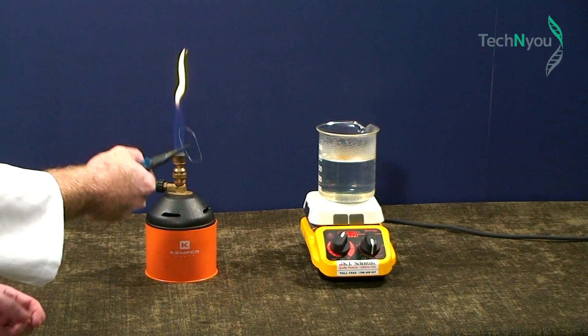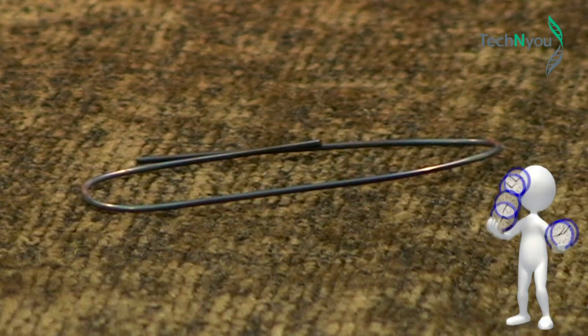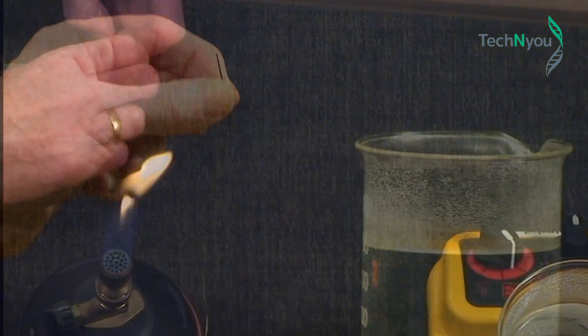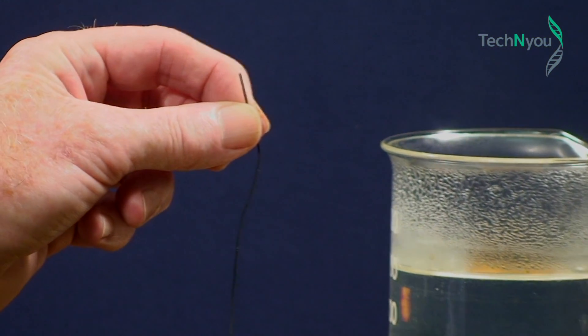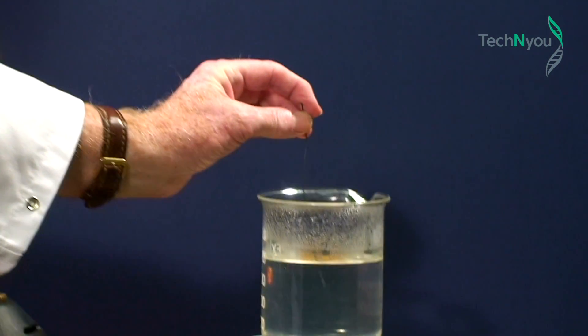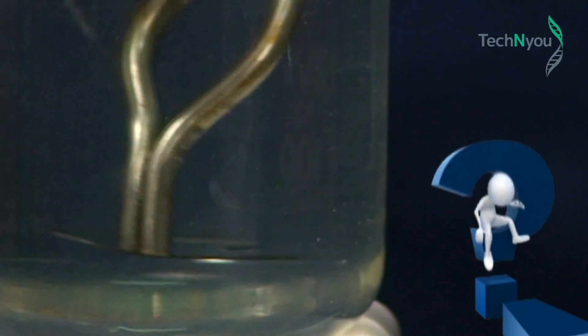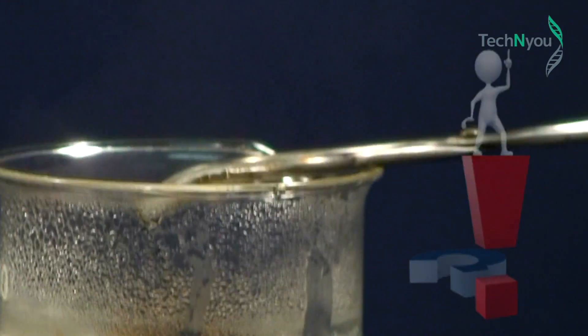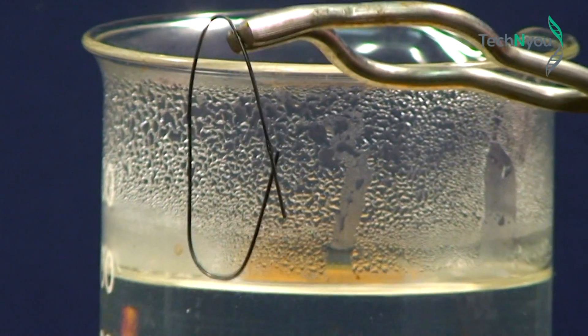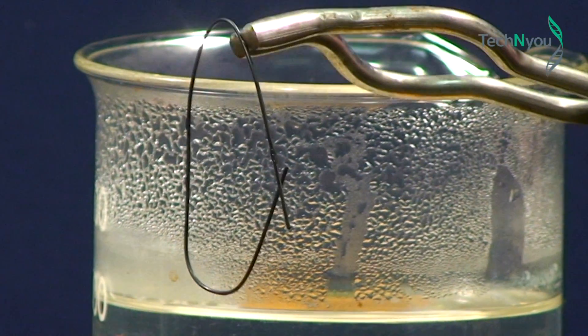We'll allow the wire to cool down. Then we'll straighten it out. It's pretty much straight. Watch what happens now when we drop it into hot water. Look, we have our loop back. That's how easy it is. Our Nitinol wire has a new memory. From here on, it's a loop.